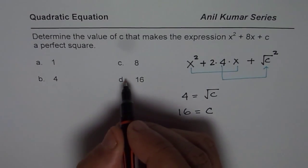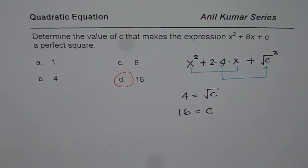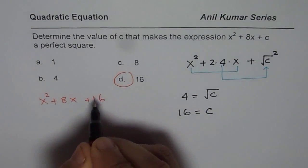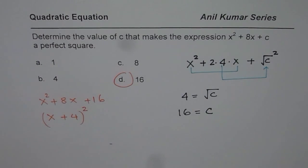And as you know the question answer is D. 16 should be the value of C. So if you write 16 here then you get x² + 8x + 16 which could be written as (x + 4)². It becomes a perfect square. So that is the idea. I hope you learn from it. Thank you and all the best.